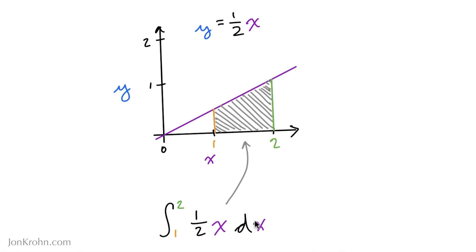So specifically, here's our function. Here is the variable that we'd like to integrate over, x. And then we indicate at the bottom and the top of the integration operator the particular range that we would like to integrate over, that we'd like to calculate the area in. So we'd like to calculate it from 1 to 2. So here we go, 1 and 2.